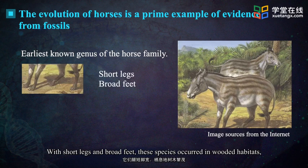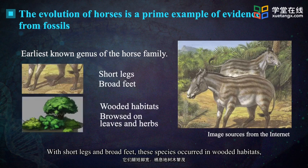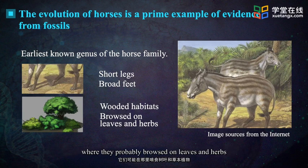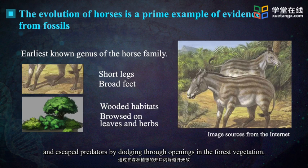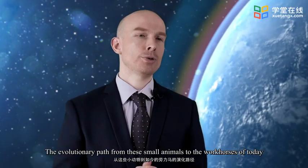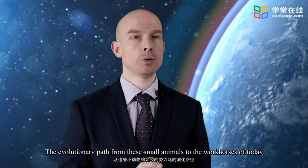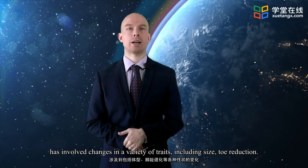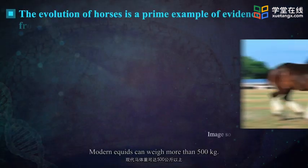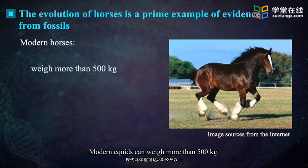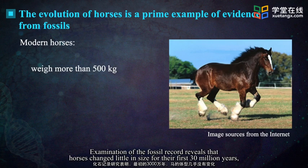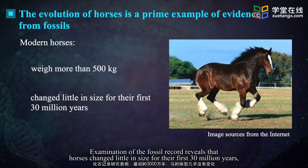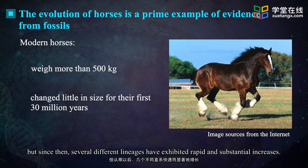With short legs and broad feet, these species occurred in wooded habitats, where they probably browsed on leaves and herbs and escaped predators by dodging through openings in forest vegetation. The evolutionary path from these small animals to the workhorses of today involved changes in a variety of traits including size and toe reduction. Modern Equus can weigh more than 500 kilograms. The fossil record reveals that horses changed little in size for their first 30 million years, but since then several different lineages have exhibited rapid and substantial increases.